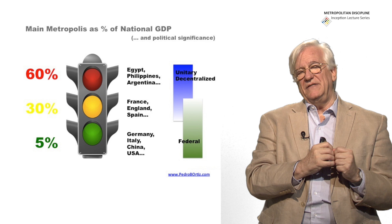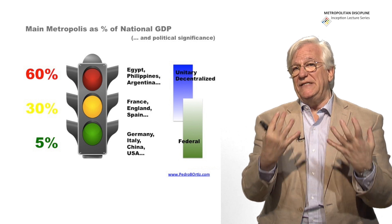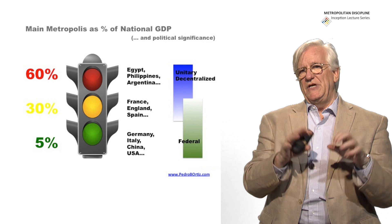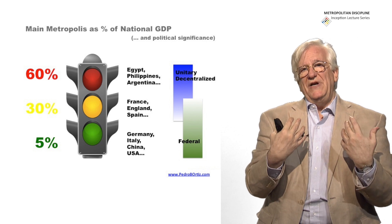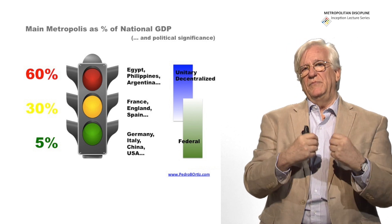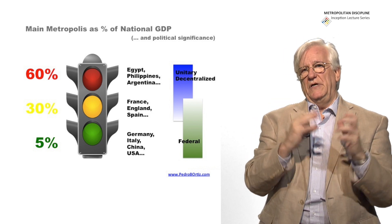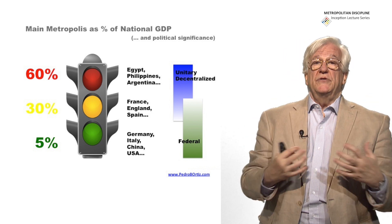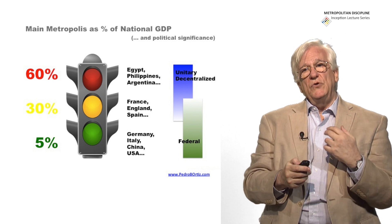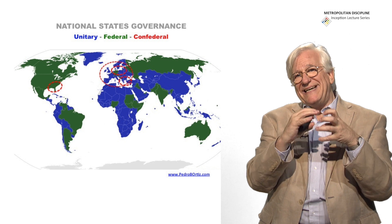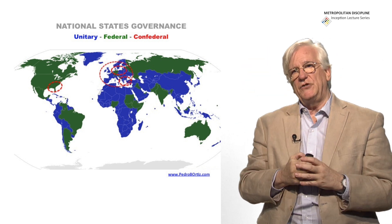Depending on whether you are in the 60%, 30%, or 5% bracket, the national government will have a different political attitude toward how those metropolises are managed. In the 5% bracket, the national government is not afraid of giving the metropolis strong political management. That's why in Germany the federal system allows Berlin, Bremen, and Hamburg to have their own metropolitan governance. In countries where the metropolis is close to 60–70% of national GDP, the national government will not accept that. We must be aware of this to understand what governance mechanism will work best for a given metropolis.